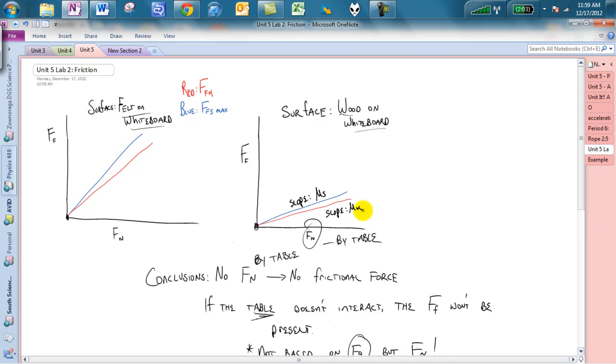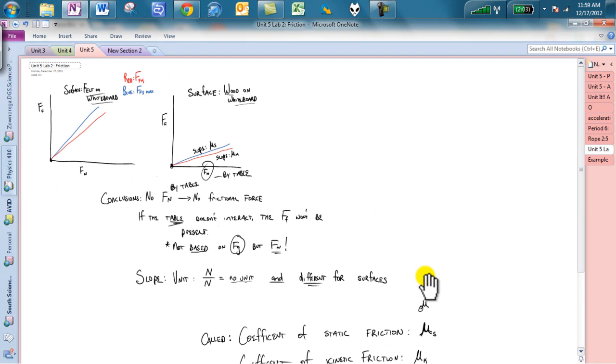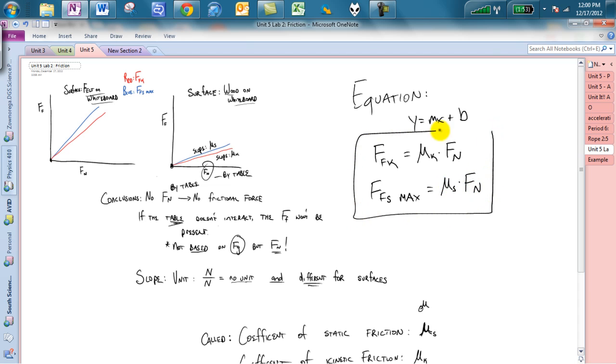So, kind of taking a look at this, that is our main point. And from here, we can actually get a new equation. Actually, two new equations. Our new equation, as always, follows y equals mx plus b. And what we can do is we can say ffk is going to be equal to our slope, which is mu sub k times fn. And our other equation that we can follow is ffs max is equal to mu sub s times fn. So these are our two new equations for friction.